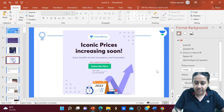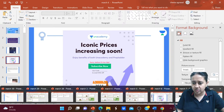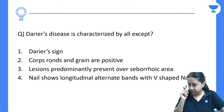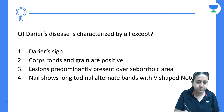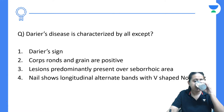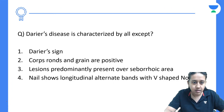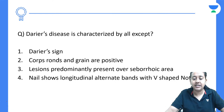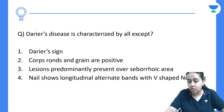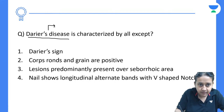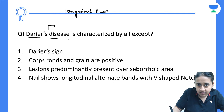Let us start with today's questions. I will be discussing questions from the Genodermatosis topic. The first question: Darier's sign is characterized by all except — Darier's sign, corp ronde and grain is positive, lesions predominantly present over the seborrheic areas, nail shows longitudinal alternate band with V-shaped notching. Please remember, Darier's disease is a congenital acantholytic disorder.